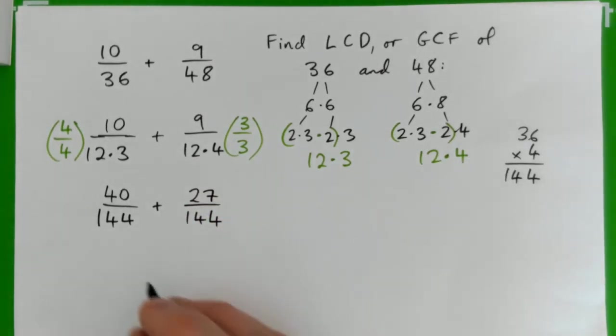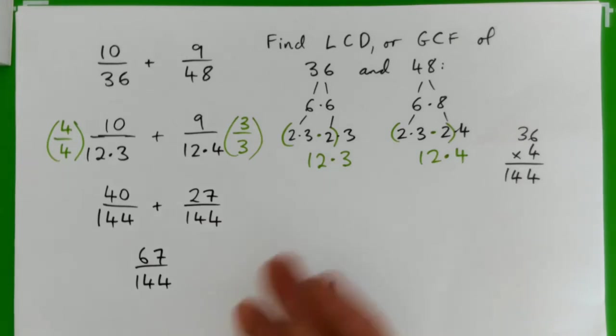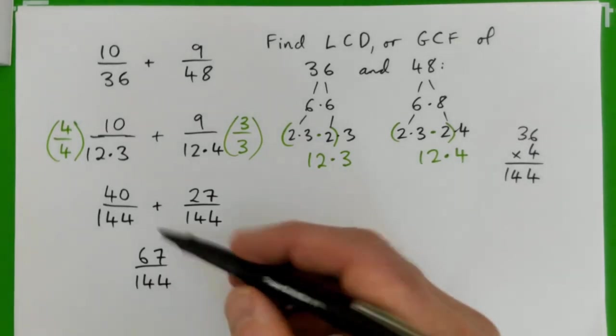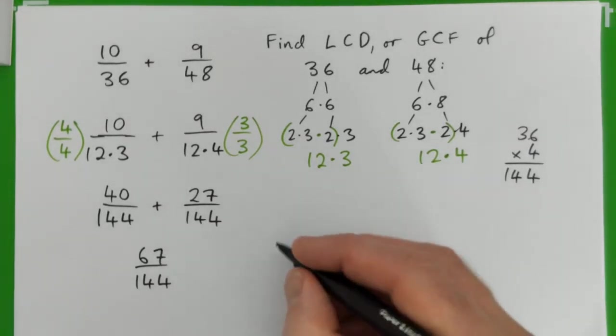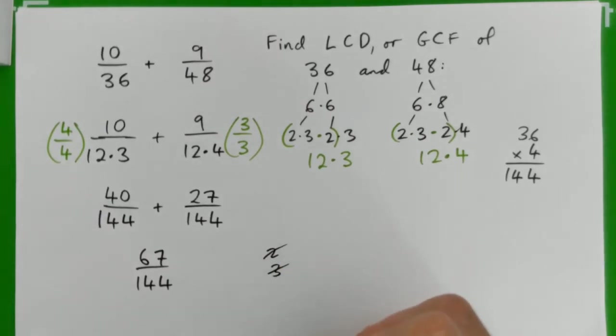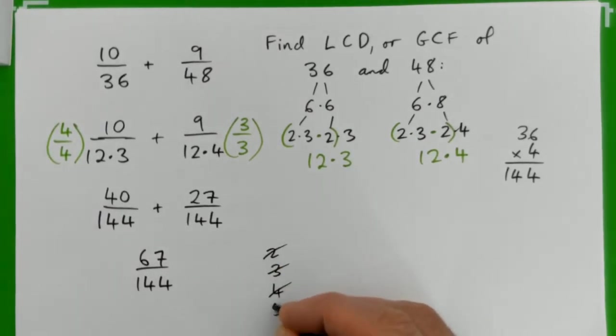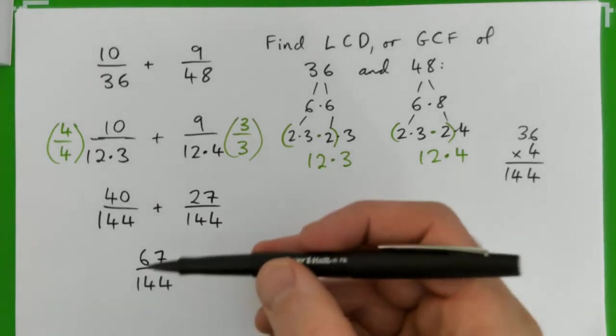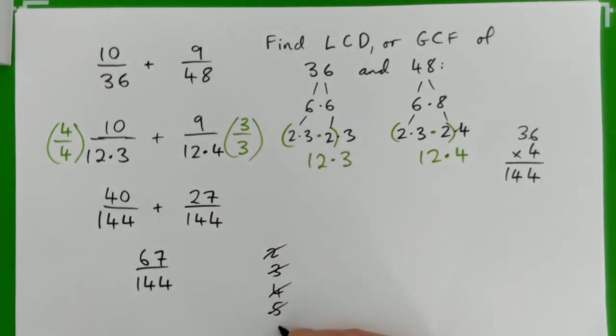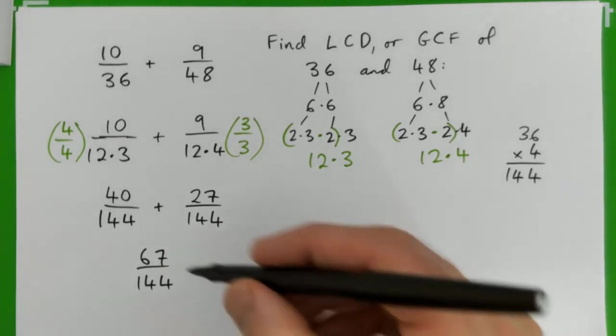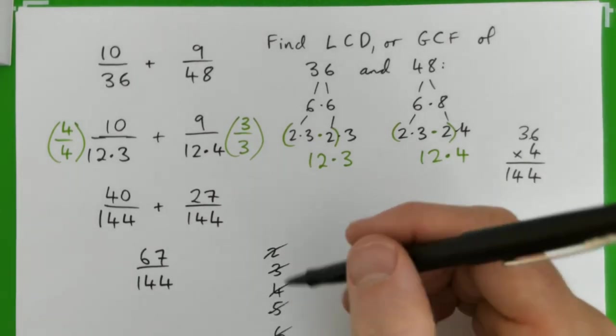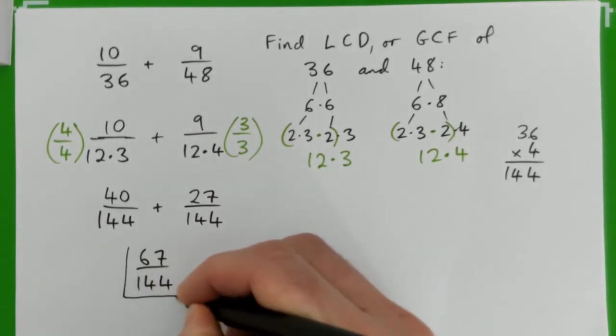So if we add the tops, we get 67 over 144. And can we simplify that? Always check if you can simplify your answer. So 2 won't go into the top or bottom, and 3 won't, 4 won't go in for sure, 5 won't go in because they don't end in 5 or 0. 6 won't go into the top or bottom, 7 won't go in, 7 times 9 is 63. So pretty sure we've got this simplified as far as we can get it.